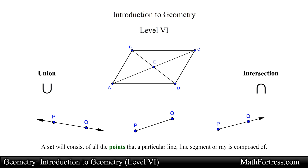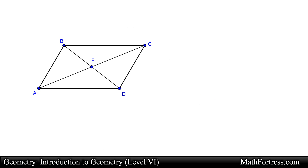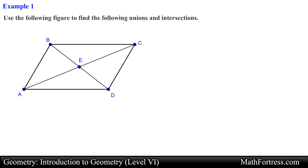For example, you can think of a line as a set of all points that extend infinitely in both directions. A line segment is a set of all points that starts at one point and ends at another point. And a ray is a set of all points that starts at one point and extends infinitely in one direction. With that said, let's go ahead and start with the first example.